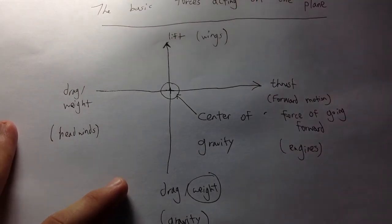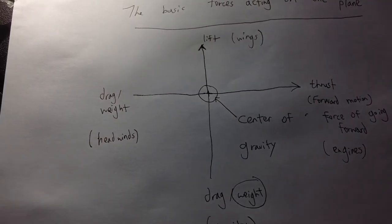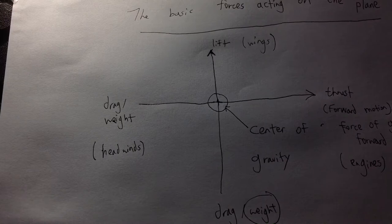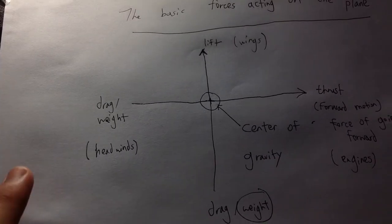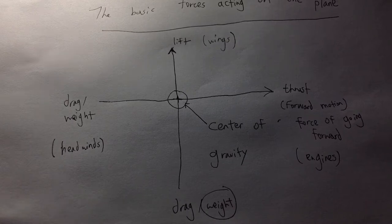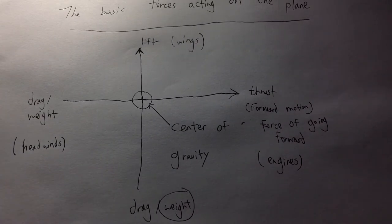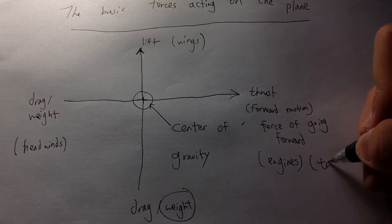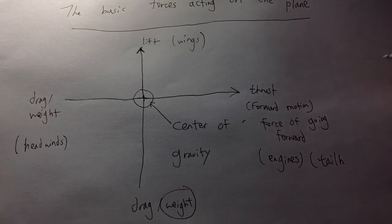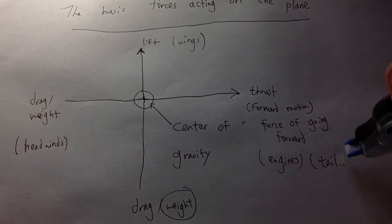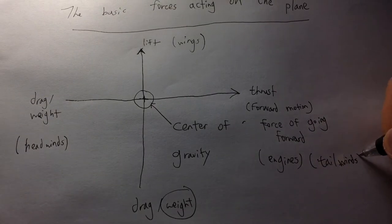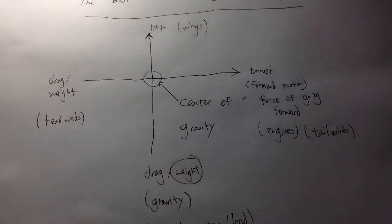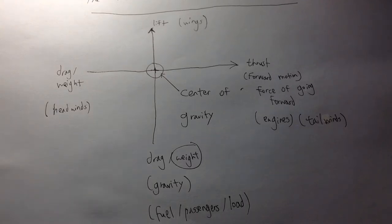Lift is actually by the wings, and drag and weight are caused by headwinds. Thrust is by forward motion, pushed mainly by engines and also by tailwinds. Weight is pushed by gravity through passengers and load.